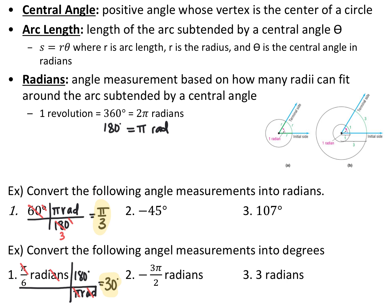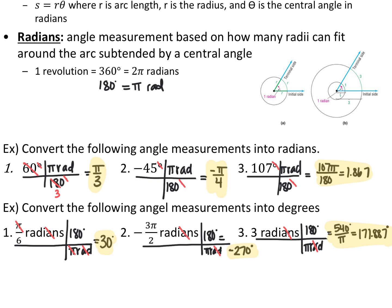Pause the video and convert negative 45 degrees and 107 degrees into radians, and negative 3 pi over 2 and 3 radians into degrees. To convert negative 45 degrees, multiply by pi over 180 and get negative pi over 4. For 107 degrees, you get 107 pi over 180, which can also be written as approximately 1.867 radians.